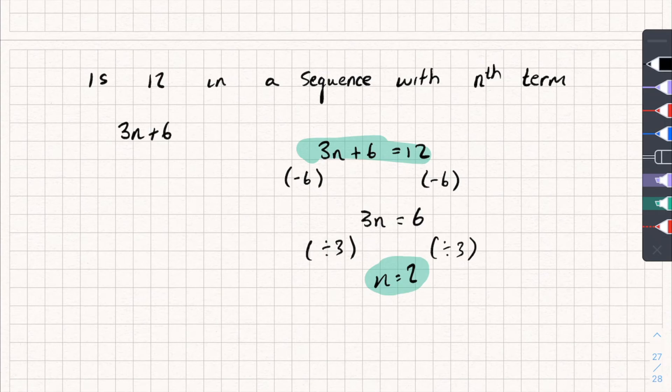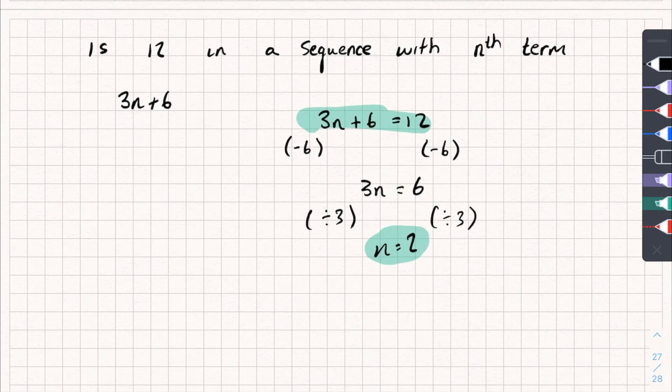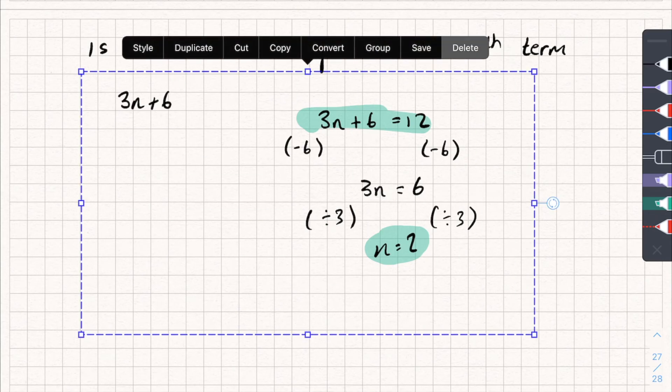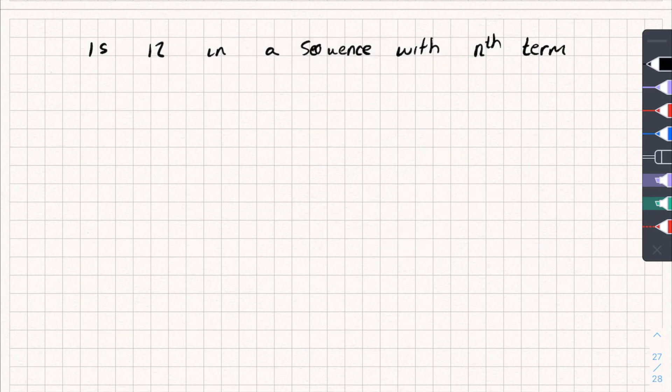So I'll show you an example where it doesn't work. Say I said, is 12 in the sequence with the nth term? Is 12 in the sequence with the nth term 5n plus 5? Well, let's work it out. 5n plus 5 is equal to 12.